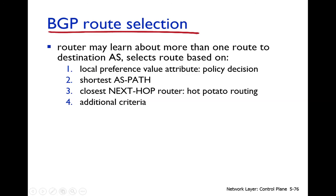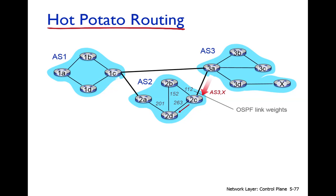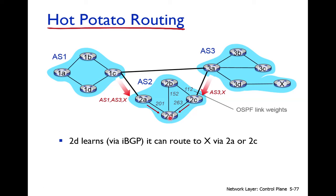If the closest next hop router criterion is used instead, then for 2D: if it uses the path through 2C, the next hop is 2C at a distance of 263. If it uses the other path, the next hop is 2A at a distance of 201. Since 201 is less than 263, the path with next hop 2A is selected because it is the closest next hop.